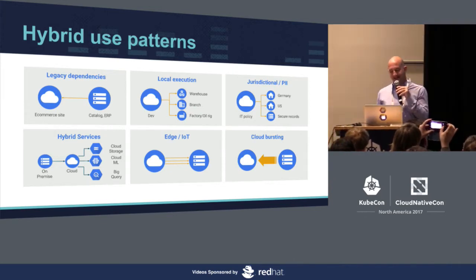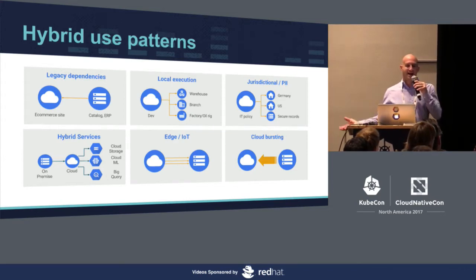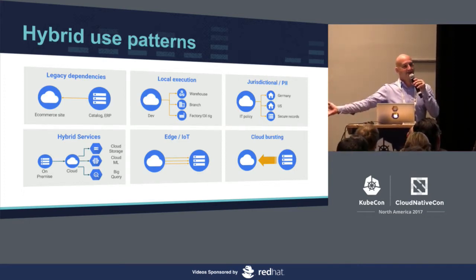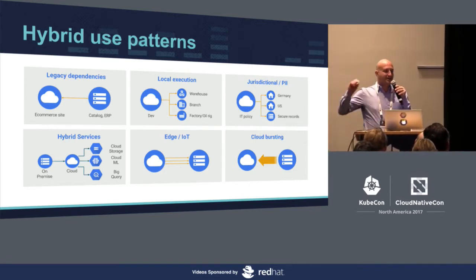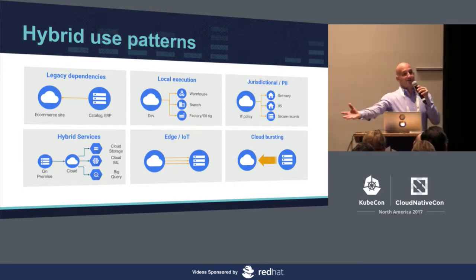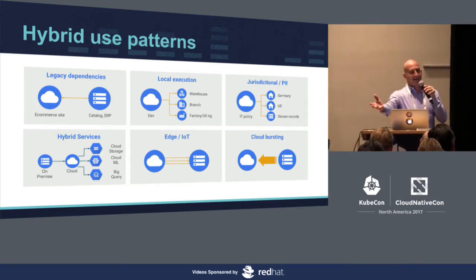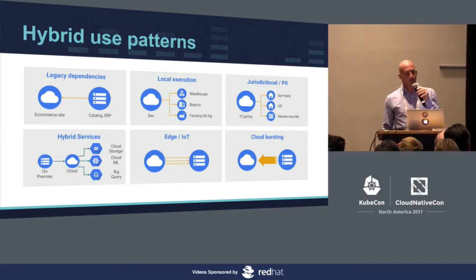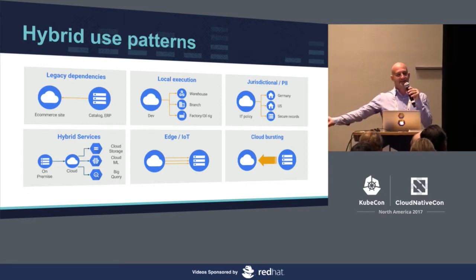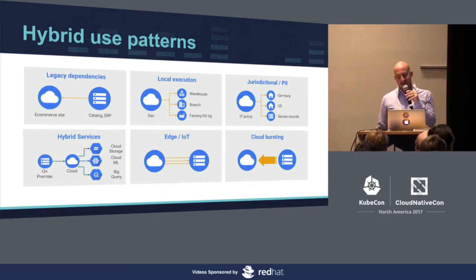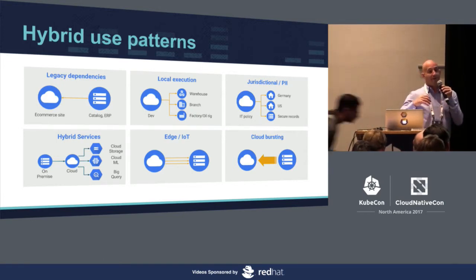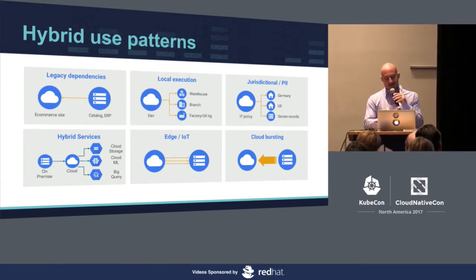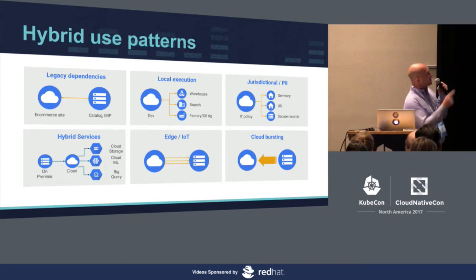The ones we'll demo today are local execution and hybrid services. The most common use case I see is: I want to build my mobile app in the cloud, but it still needs to connect back to my giant database on-prem, and that's not going to move to the cloud anytime soon. Another is running a little Kubernetes cluster on all of my big-box stores or oil rigs — I'm not going to put my oil rig in the cloud. Then there are jurisdictional reasons: I need to keep data in Germany or in Europe, which means you have either cloud restrictions or a data center that manages particular assets that have to stay there.